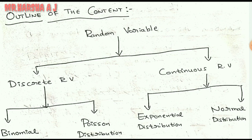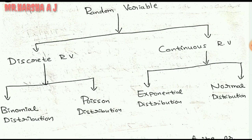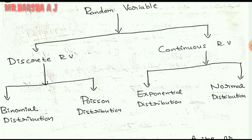In the entire module you have to study this algorithm. First we start with the definition of random variable, which we just finished. In random variable we study two types: discrete random variable and continuous random variable. Under discrete: binomial distribution and Poisson distribution. Under continuous: exponential distribution and normal distribution. In this module I'll explain discrete random variable with examples; in the next video I'll explain binomial and Poisson distribution.